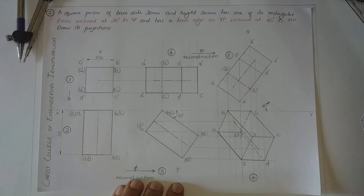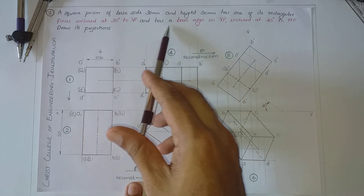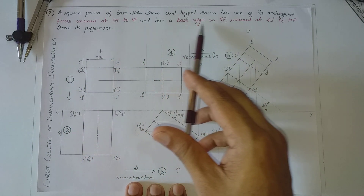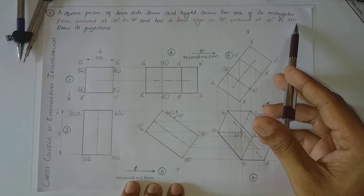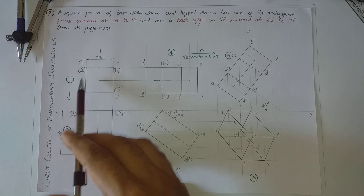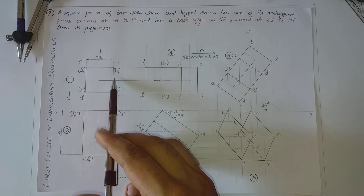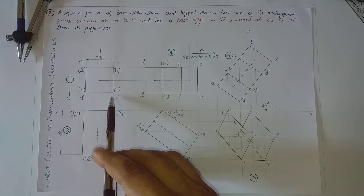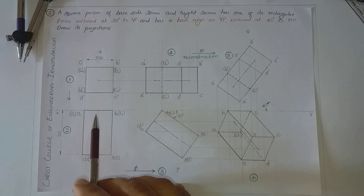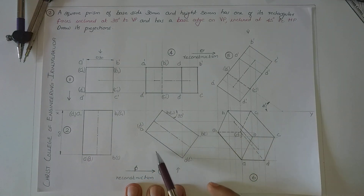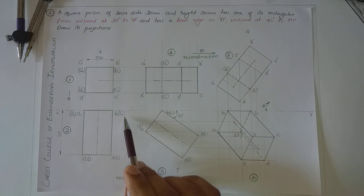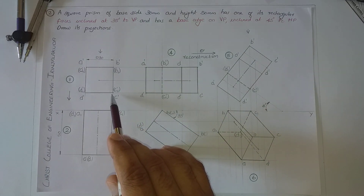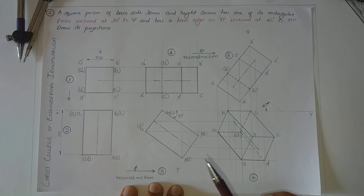In question number two, we have two inclinations: the face is inclined at an angle of 35 degrees to VP, and the base head is on VP — meaning the prism is resting on VP on a base head — and inclined at an angle of 45 degrees to HP. Starting from diagram number one, in diagram number two I have made an edge on the right hand side. When the solid is tilted in the third diagram, it must be resting on a base edge, which is B1C1. That is why I have made the base edge on the right hand side.